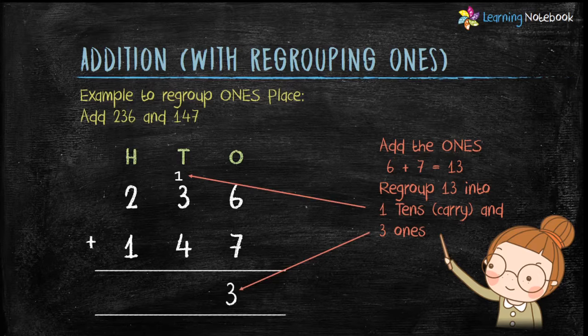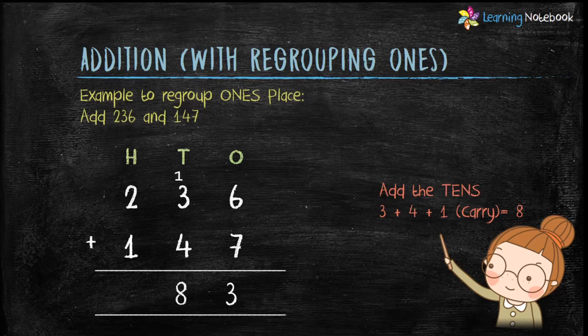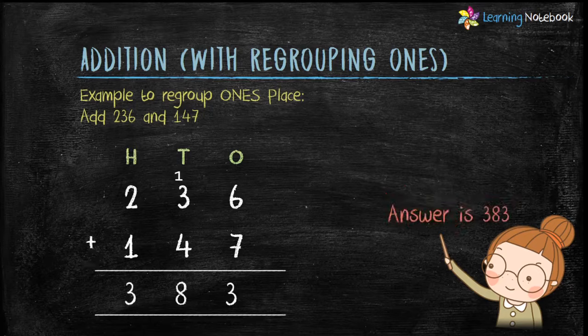Moving forward, add the digits at the tens place: 3 plus 4 plus 1 (the carry) gives us 8. Now add the digits at the hundreds place: 2 plus 1 equals 3. So our answer comes out to be 383.